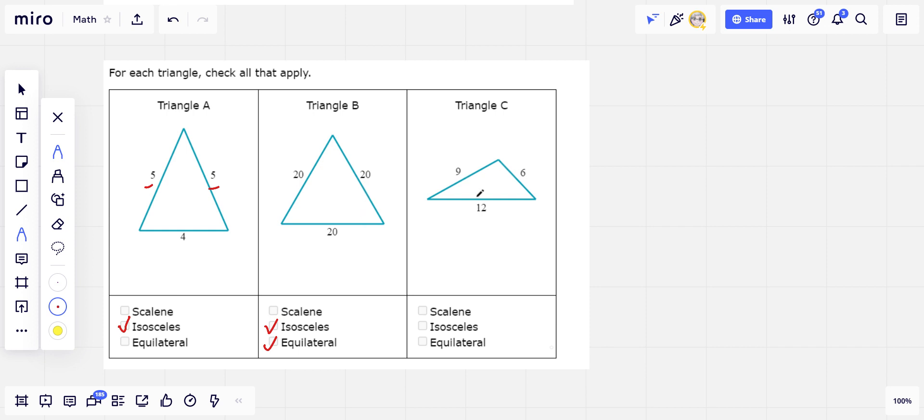And this one, we have 6 and 9 and 12. All three of those are different. That's a scalene triangle.